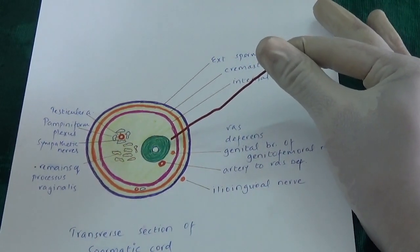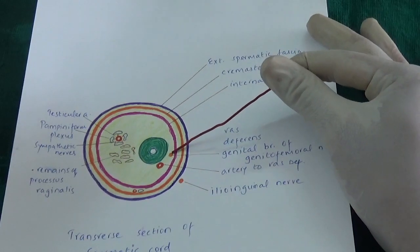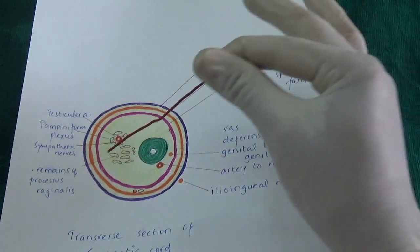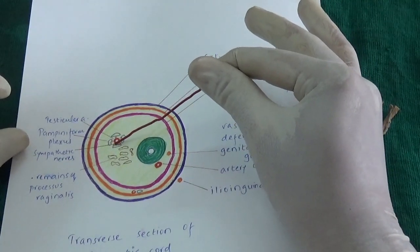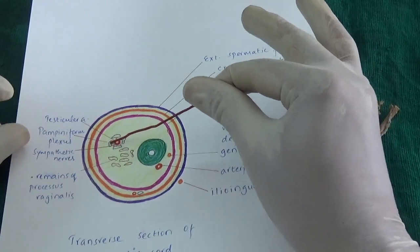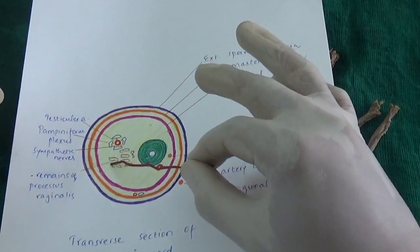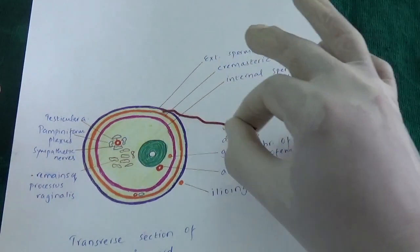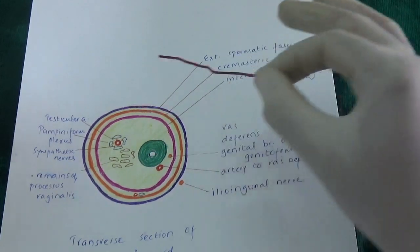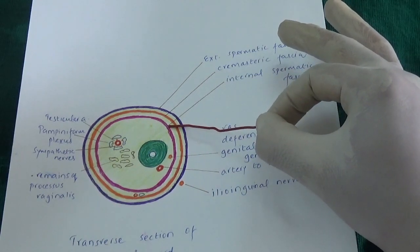In a schematic diagram of the spermatic cord, the structures include: vas deferens, genital branch of the genitofemoral nerve, artery to the vas deferens, testicular artery surrounded by sympathetic nerve plexus, testicular venous plexus (also known as pampiniform plexus), lymphatic channels, and remnants of processus vaginalis. On the outer side of the spermatic cord lies the ilioinguinal nerve, and the cord is covered by external spermatic fascia, cremasteric fascia, and internal spermatic fascia.